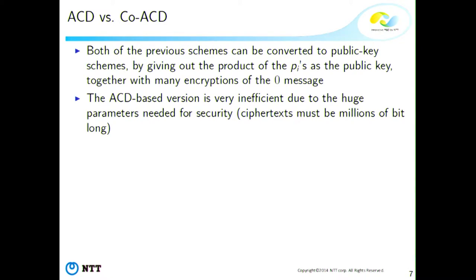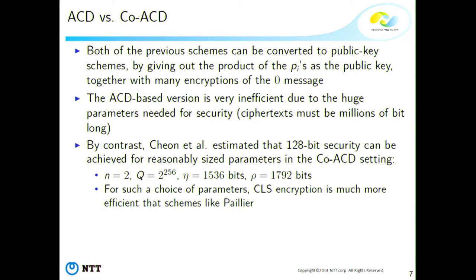The ACD-based scheme is not very efficient because for security you need ciphertexts that are very large — like millions of bits. But Chon et al. said that the co-ACD version should be secure with much smaller parameters: Q is like 256 bits, and there are two primes of about 1,000–1,500 bits. For such a choice of parameters, CLS encryption becomes quite efficient — much faster than Paillier.